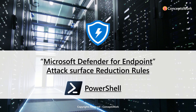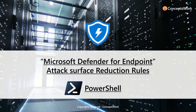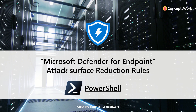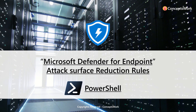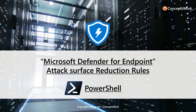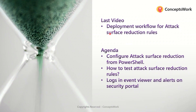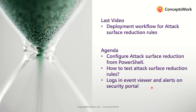Welcome back to our channel. In this video I'm going to talk about how you can enable attack surface reduction rules from PowerShell. In the last video we discussed the deployment workflow for attack surface reduction rules, whereas in this video we're going to talk about how to configure them with PowerShell, how to test them with sample files, and how to check logs in Event Viewer and alerts on the security portal.